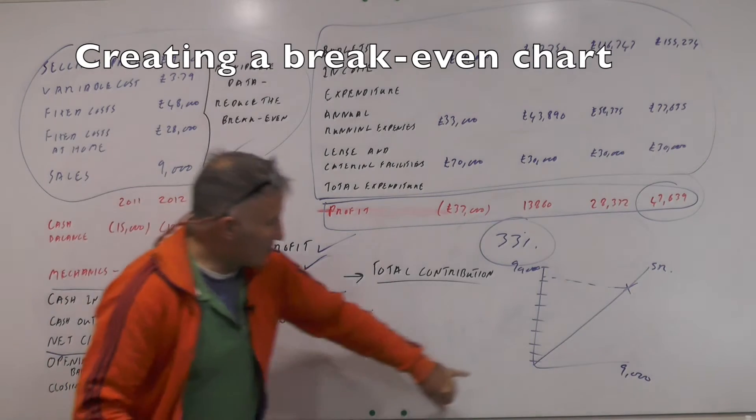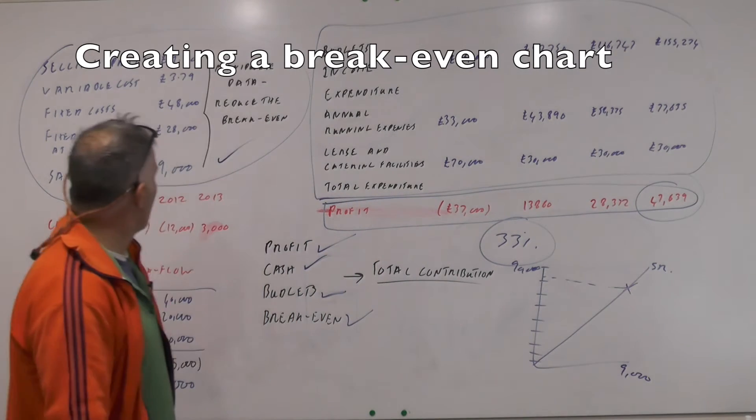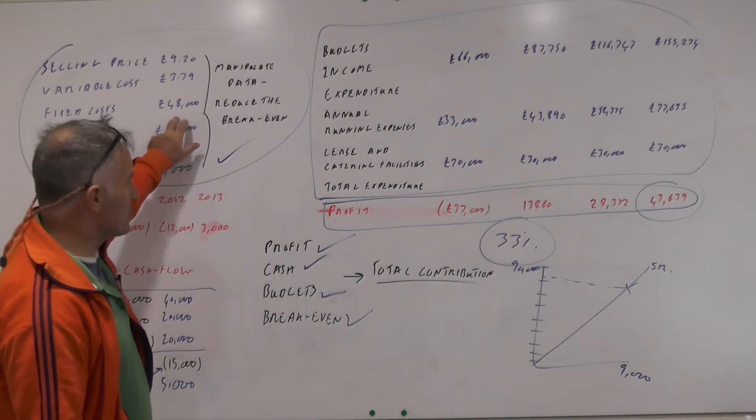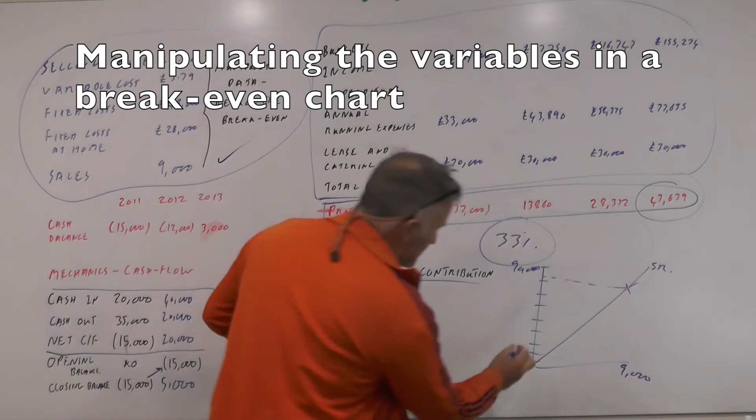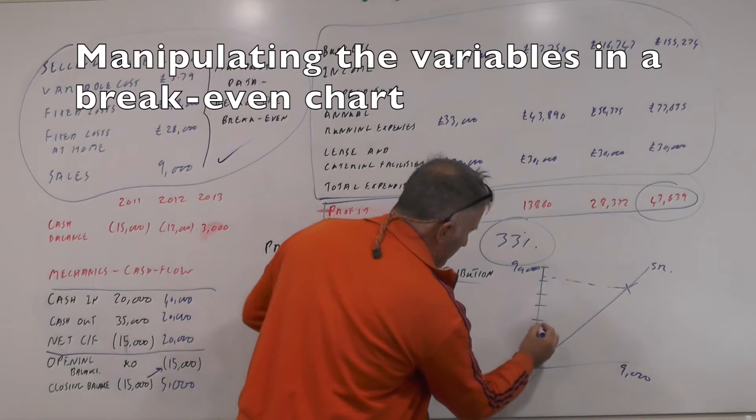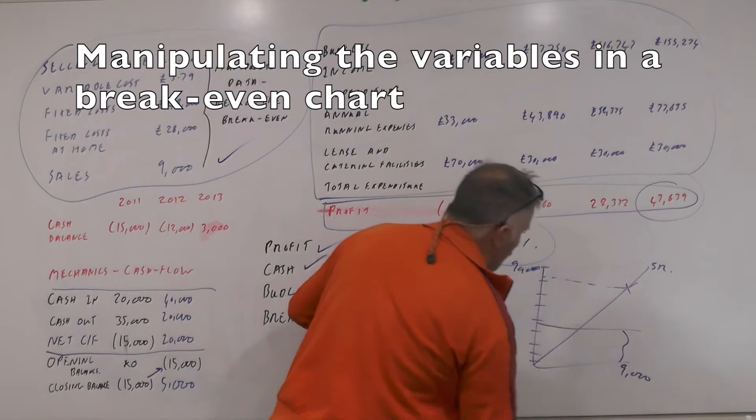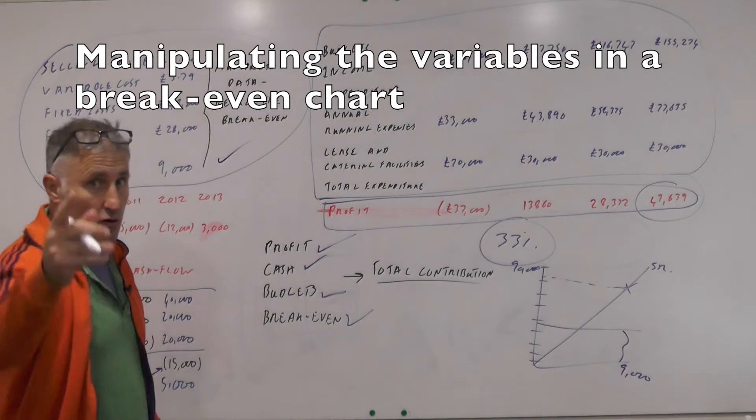And that is going to give us our sales revenue line or our total revenue line. Okay because we sell no products and we're going to get no money in. If we then put the breakeven points or the fixed cost line on there. 10, 20, 30, 40, 48,000 quid. Those are your fixed costs.